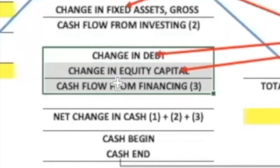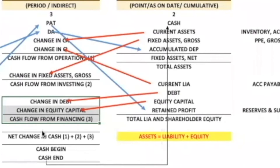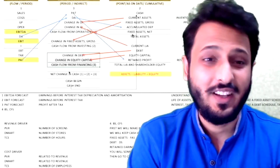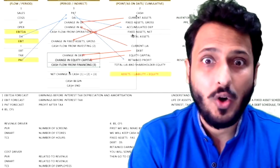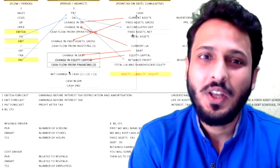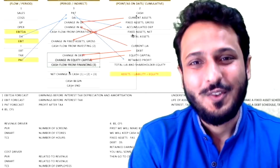Similarly, cash flow from financing activities links to the balance sheet. So everything in the cash flow statement is ultimately linked to the balance sheet and the income statement. At the end, we transfer the final cash figure to the balance sheet. In the next video we are going to apply all four steps from scratch, taking our own assumptions — see you there.